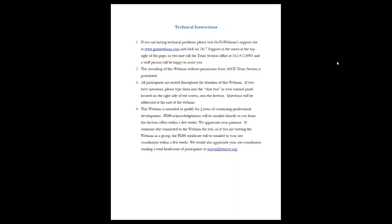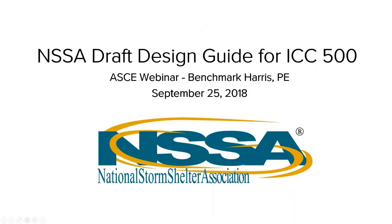Thank you, and I want to thank everyone for joining us today for the ASCE Texas Section webinar titled National Storm Shelter Association Draft Design Guide for ICC 500. This webinar is the eighth in our series of monthly technical webinars for 2018. I would like to thank the branches for hosting viewing sites all across Texas. As the State Association for Civil Engineers, we are happy to provide this service to the engineering community. If you are not a member of ASCE or the Texas Section, I invite you to become a member so that you can benefit from being part of this professional association.